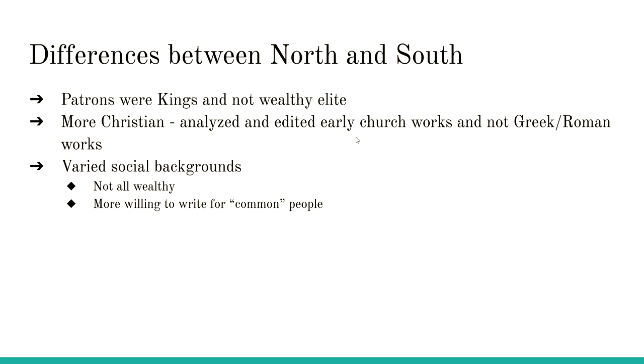What were the biggest differences between the Northern and Southern Renaissance? In the South — in Italy — the patrons were the wealthy elite, middle class, and upper class. But in Northern Europe, the patrons were still kings, princes, and monarchs. Both analyzed old works, but the Southern Renaissance analyzed ancient Greek and Roman works, while the Northern Renaissance went back to research the original Christian works — the writings of St. Paul and St. Peter, things like that.